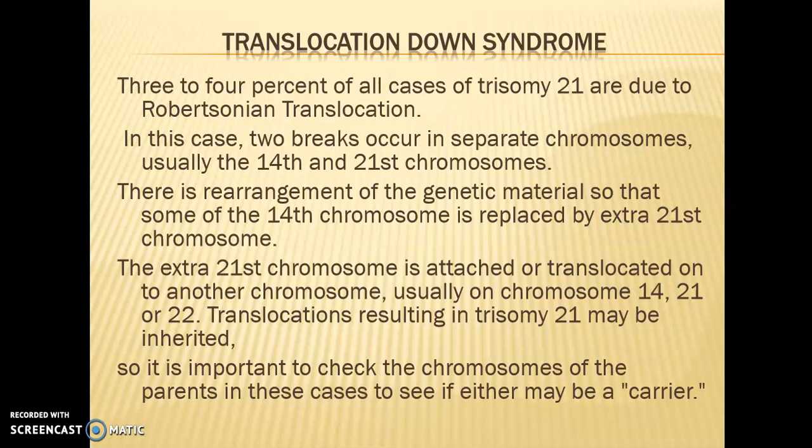Translocation resulting in Trisomy 21 may be inherited, so it is important to check the chromosomes of the parents in these cases to see if either may be a carrier. If a child is identified as having translocation Down syndrome, medical personnel must be cautious because the next sibling may also develop Down syndrome. In other types, the disorder is purely genetic due to mistakes in cell division.